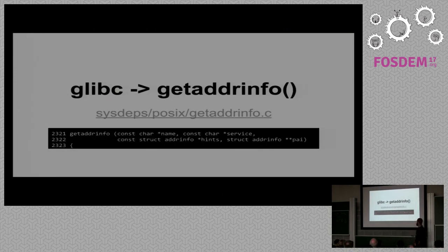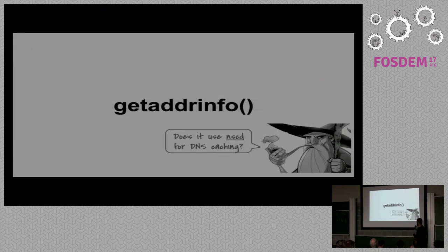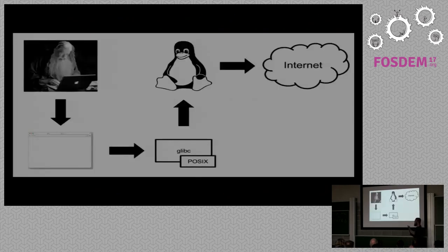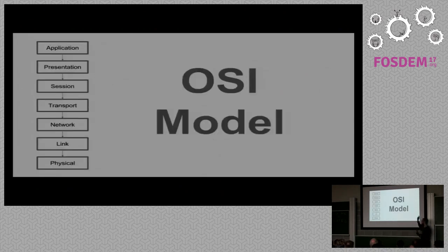So that's getaddrinfo. What getaddrinfo will do first is search on a name server caching daemon — that's another layer of caching. You may have a cache for your domain resolution, so it will ask the name server caching daemon. We're not using cache in this case. The big picture is we have a user getting to the operating system to reach the internet. But to reach the internet, we need a little bit of theory — the OSI model.